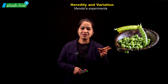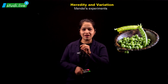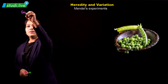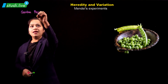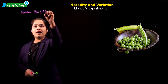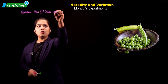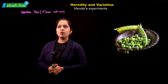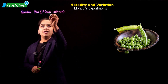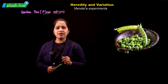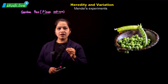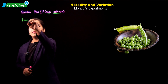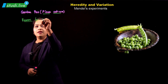We will now look at the reasons behind him selecting Garden Pea. This Garden Pea is called Pisum sativum — that is its scientific name, which we should underline separately.